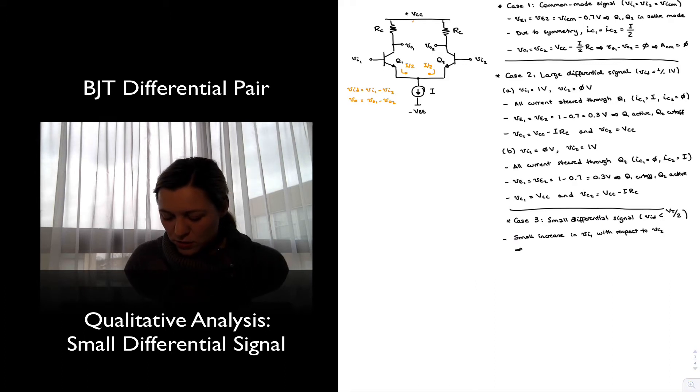And what that causes, since the emitter voltages are tied together, a small increase in the base voltage of transistor Q1 produces a small increase in V_BE. And that small increase in V_BE is going to produce a small increase in the collector current through transistor Q1, since they are related by the Shockley equation.